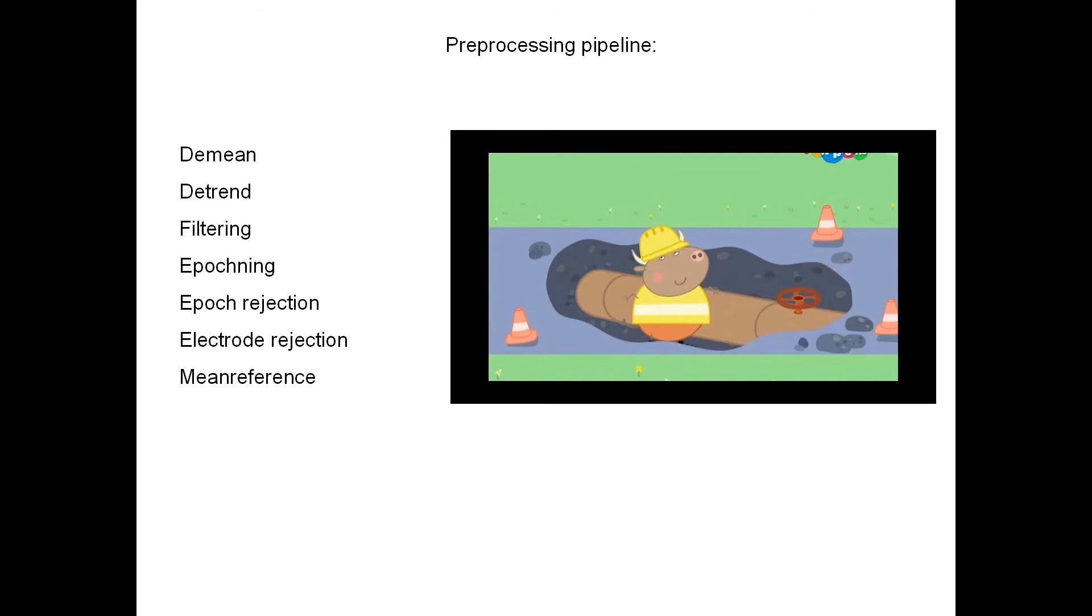Then we did epoch rejection based on the noise. The 10% of the noisiest epochs were eliminated in an automatic way. Electrode rejections: we rejected the four noisiest electrodes, typically they were in the front and in general in the periphery due to the eye motion and the mimicking muscles. And finally, mean reference. We compute the reference among the mean among all the electrodes and then we subtract each electrode from this mean, which allows us to put all the electrodes in approximately equal situation. And given the reference was occipital, this allowed us to view better responses focused occipitally.